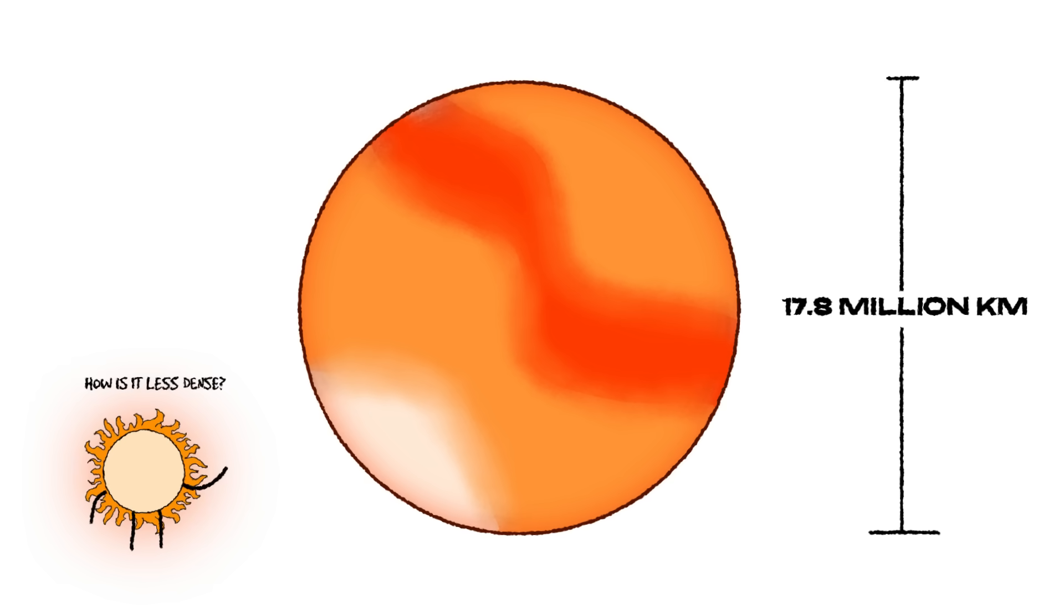If you thought Pollux was big, wait until you meet Arcturus. This red giant is 25 times bigger than the sun, with a radius of 17.8 million kilometers. Despite its massive size, Arcturus is actually less dense than our sun, meaning it only has 1.1 times the sun's mass. Its surface temperature sits at 4,300 degrees Celsius, giving it a deep, eerie red glow.